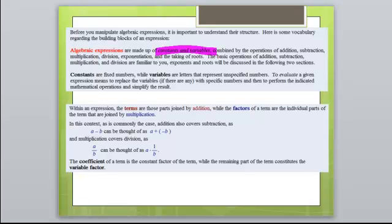Within an expression, the terms are those parts joined by addition, while the factors of a term are the individual parts of the term that are joined by multiplication. That's actually something really important right there. Terms are joined by addition, and I like to say by addition or subtraction, and then factors are joined by multiplication. So things that are multiplying together are called factors.